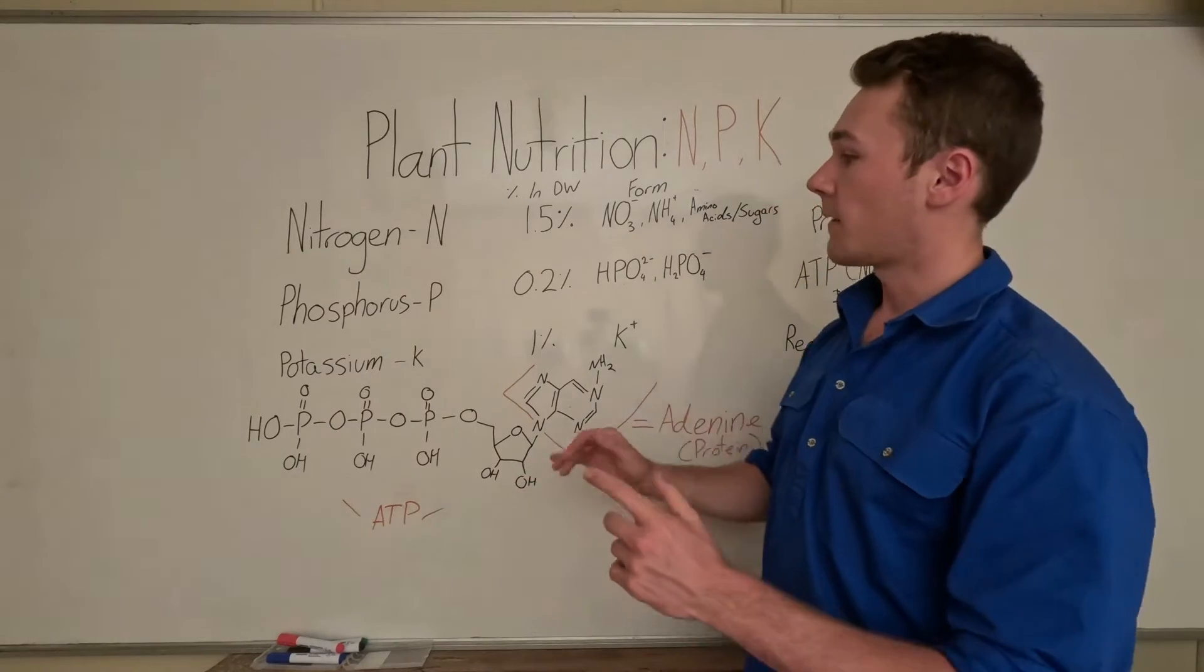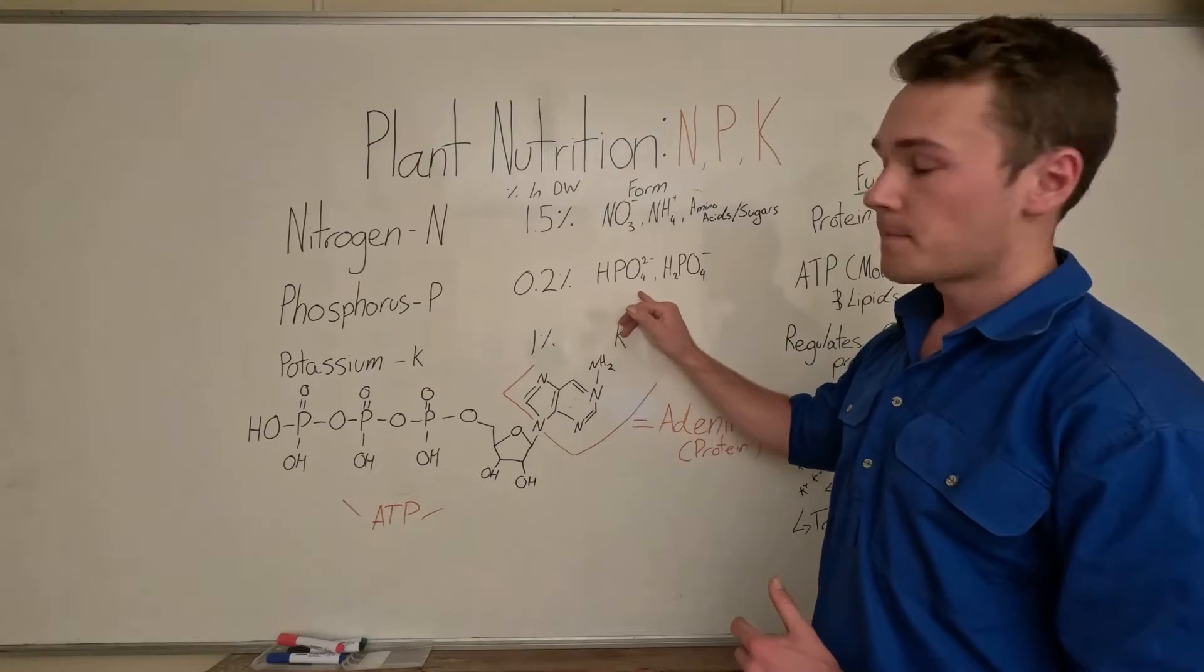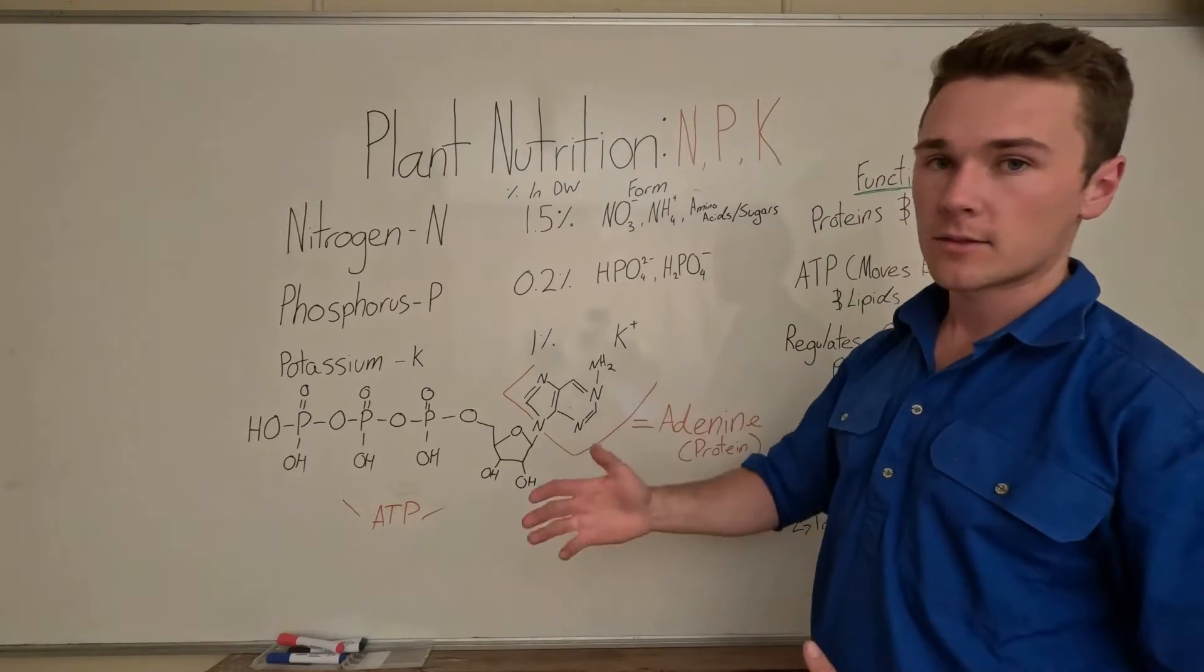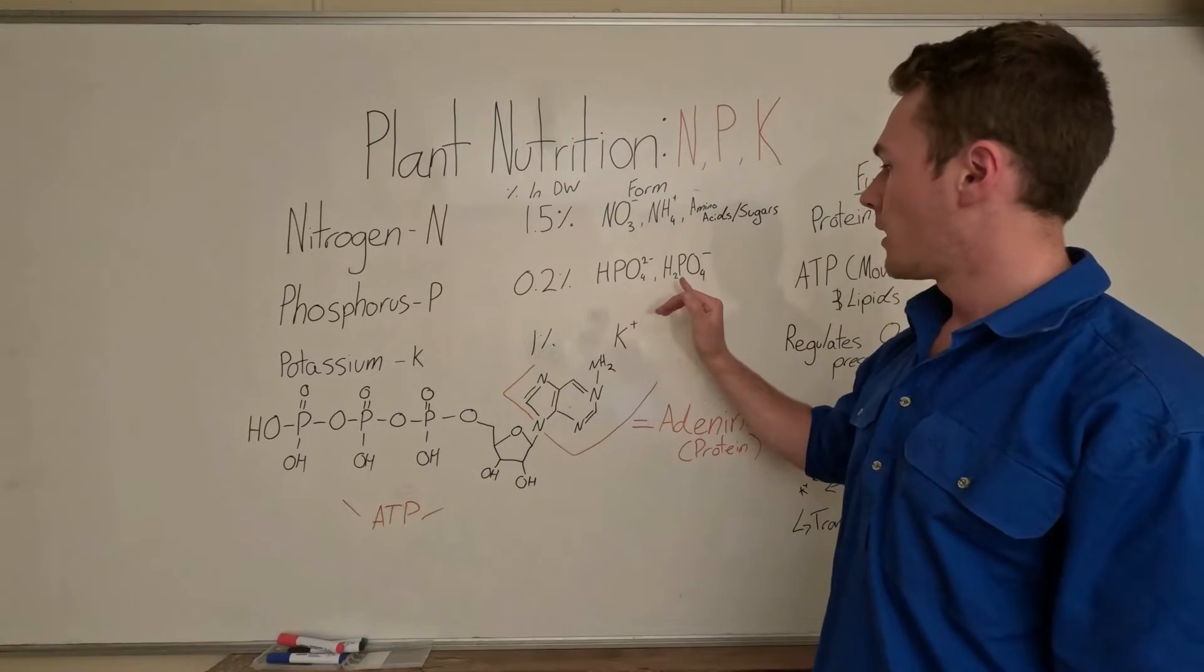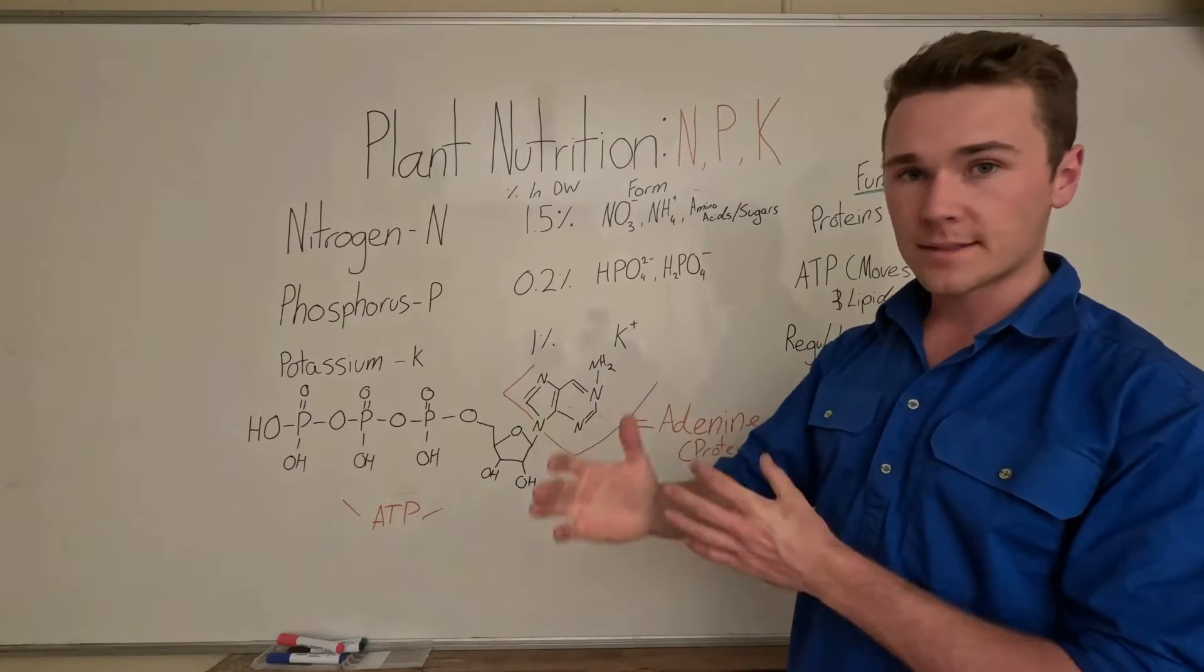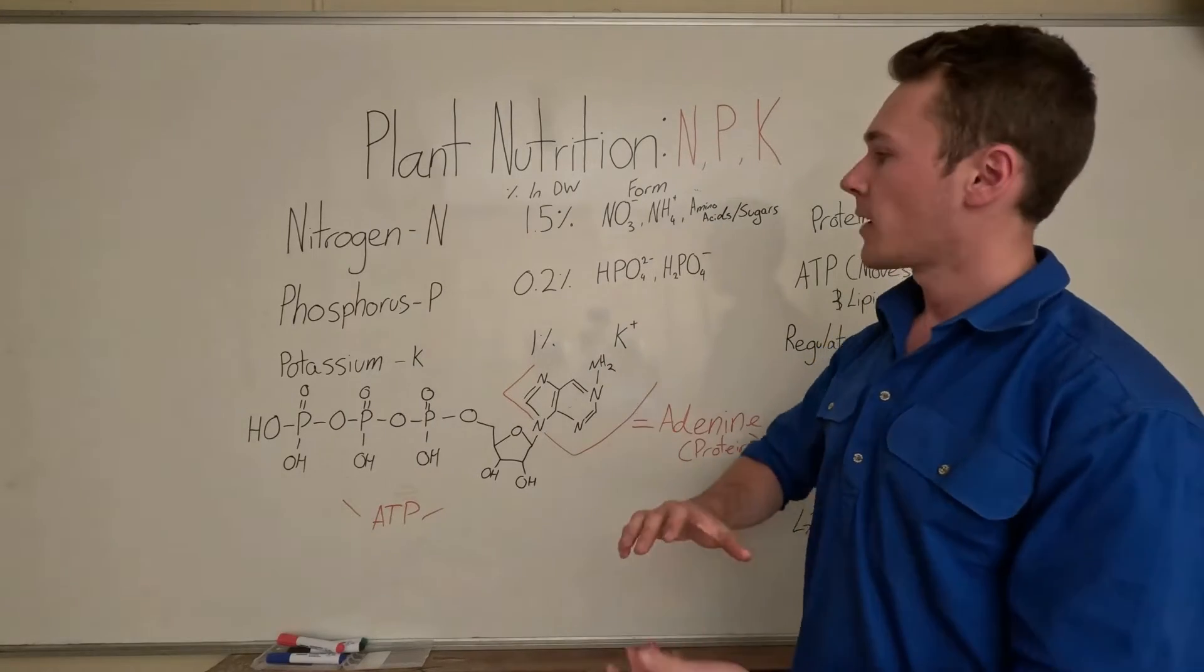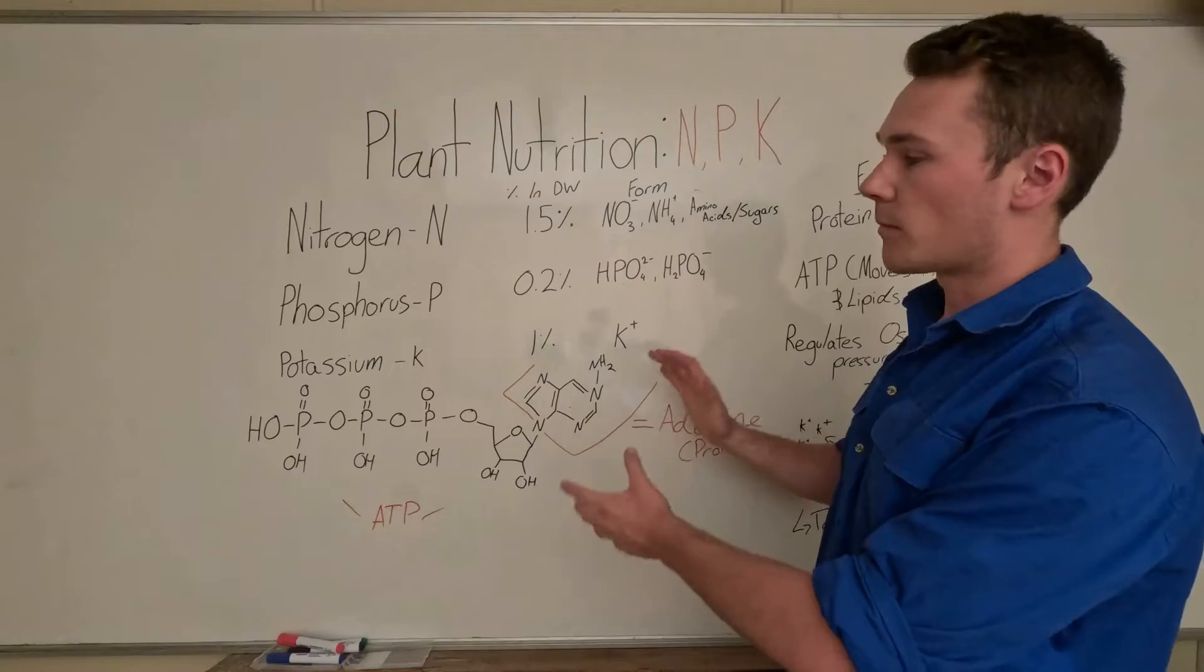The forms that we can get phosphorus in is hydrogen phosphate or dihydrogen phosphate, typically the dihydrogen phosphate—di meaning two, so two hydrogens. The hydrogen phosphate you find in more basic soils, whereas dihydrogen phosphate you find in more acidic soils, and all of this is really just driven by chemistry.